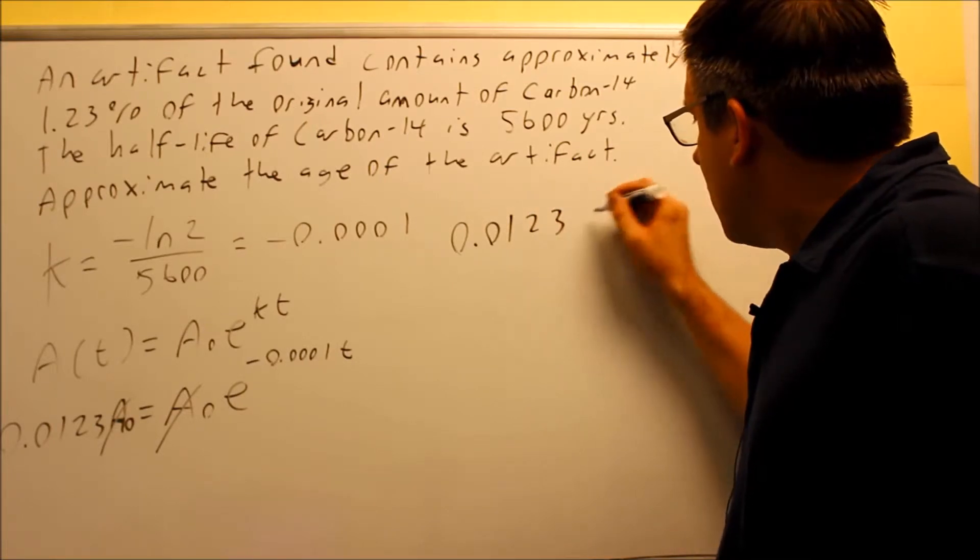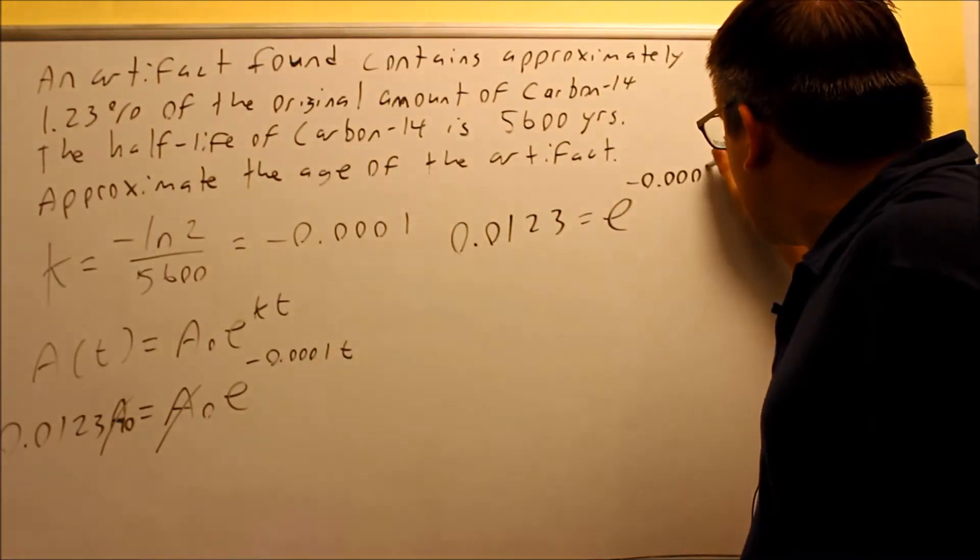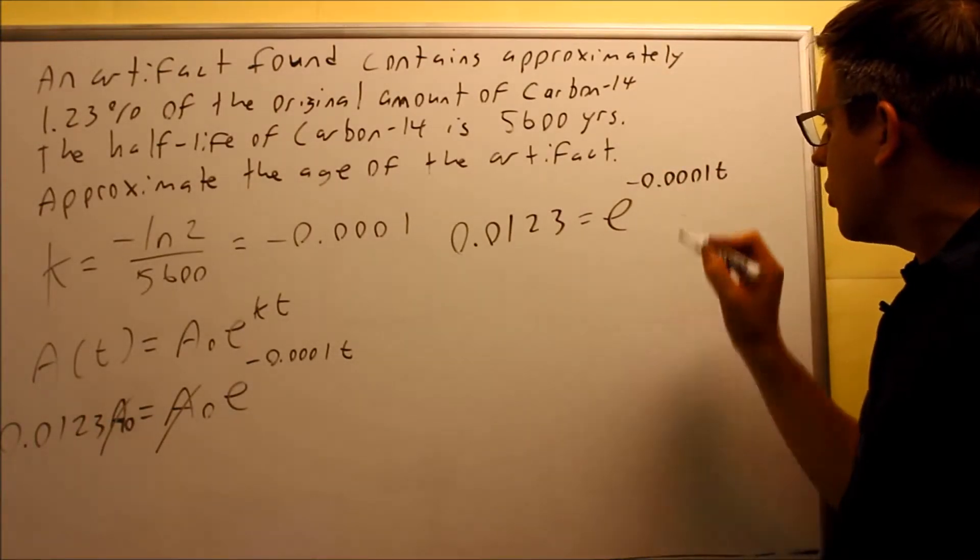So now the problem turns into 0.0123 equals e to the negative kt. So we have, that's our k value we found earlier, negative 0.0001t.